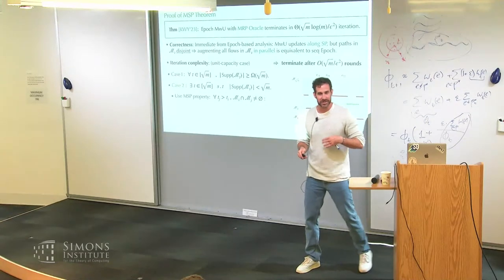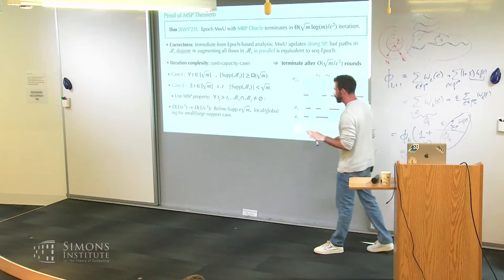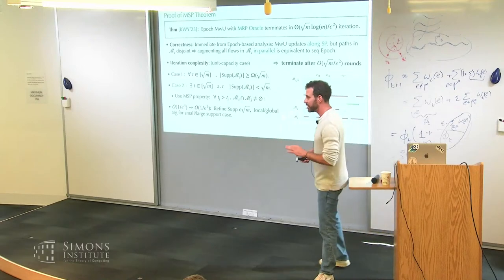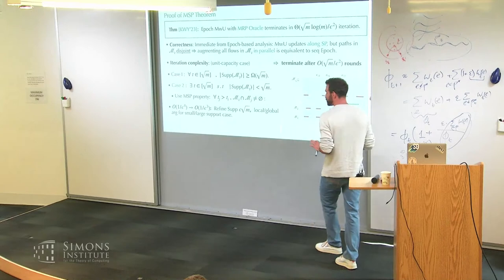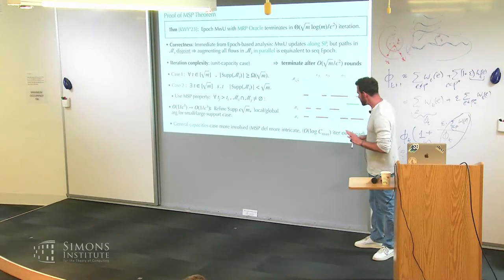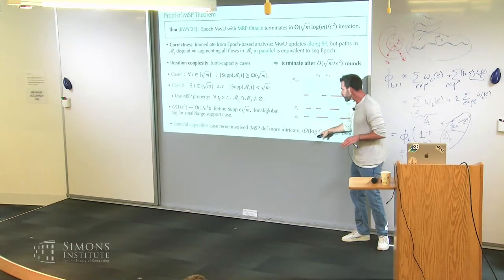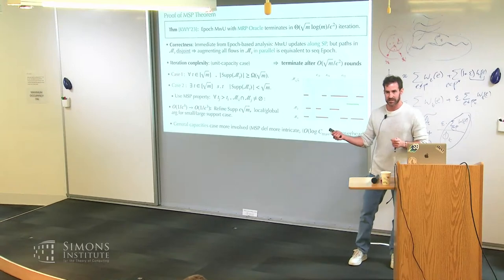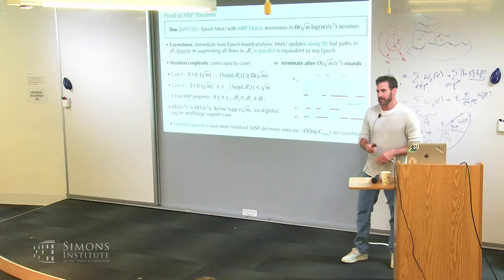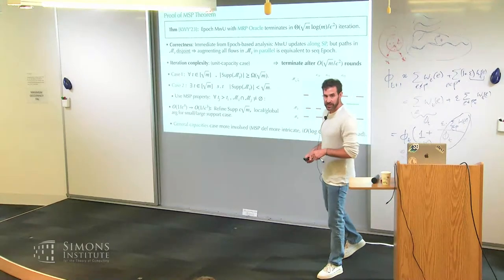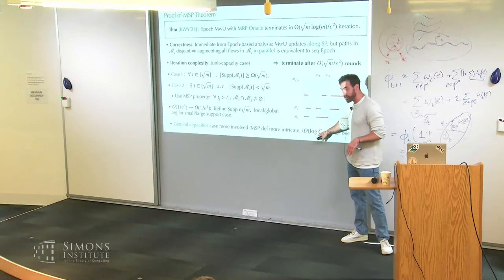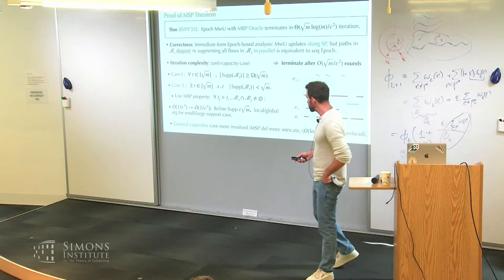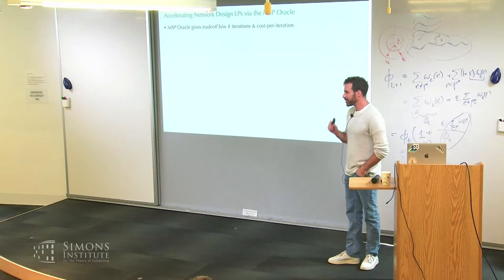For general capacities, the proof is much more involved — even the definition of maximality changes. We pay an extra log of max capacity for exponential bucketing. Even paying log rather than linear in max capacity was surprising. The general capacity case requires more work.